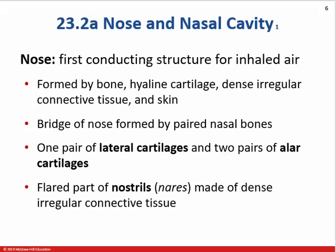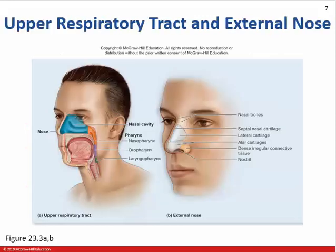Starting at the nose — the nose is really a conducting structure for breathing in. There's bone involved, hyaline cartilage, and some dense irregular connective tissue. The bridge of your nose has a pair of nasal bones, there are lateral cartilages, and your nostrils are dense irregular connective tissue. So if you look at the picture, the upper part is bone, the middle part is cartilage, and the lower part is connective tissue — that's why you want to pierce there rather than in the hyaline cartilage.